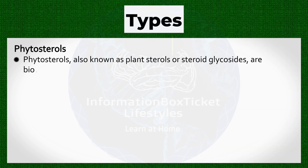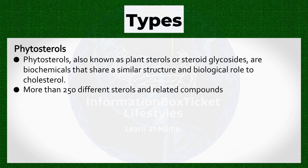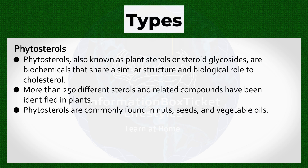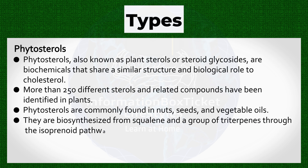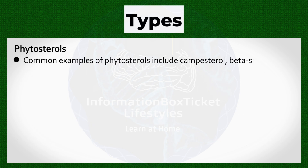Phytosterols, also known as plant sterols or steroid glycosides, are biochemicals that share a similar structure and biological role to cholesterol. More than 250 different sterols and related compounds have been identified in plants. They are commonly found in nuts, seeds, and vegetable oils, and are biosynthesized from squalene and a group of triterpenes through the isoprenoid pathway. Their primary function is to regulate membrane fluidity and permeability, playing a role in signal transduction. Common examples include camposterol, beta-sitosterol, and stigmasterol.